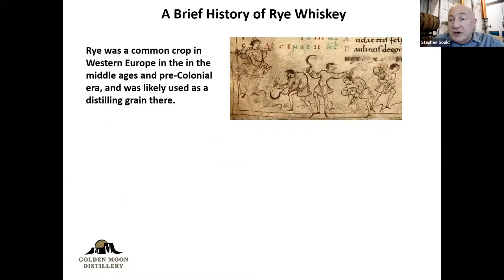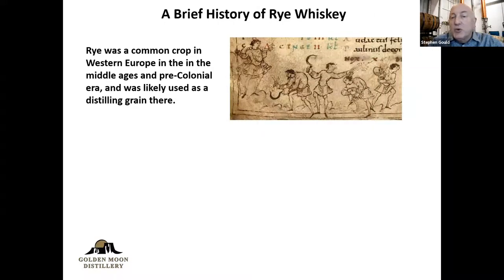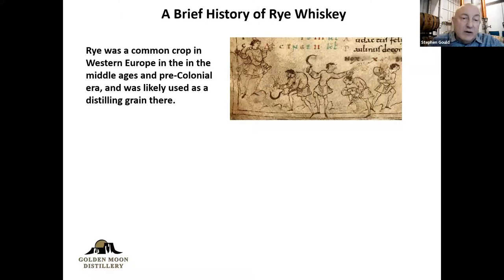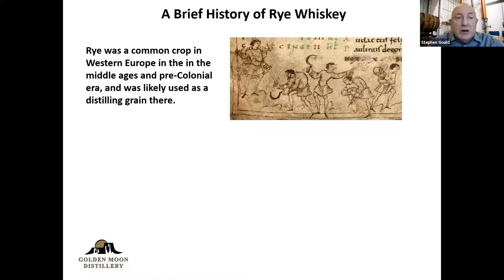Rye was a common crop in Western Europe in the Middle Ages and up until the colonial period. It was likely used very early on as the distilling grain. Distillers historically would distill pretty much off any fermentable they could get their hands on. Before there were definitions, anything you could make alcohol out of was fair game. As we all know, the ingredients affect the final product and the flavor, but in the early days of distillation they just wanted alcohol, and would very often mix it with herbs, spices, and botanicals for medicinal purposes. Rye grew very well in certain parts of Europe and was very easy to grow, making it an easy target for distillers.